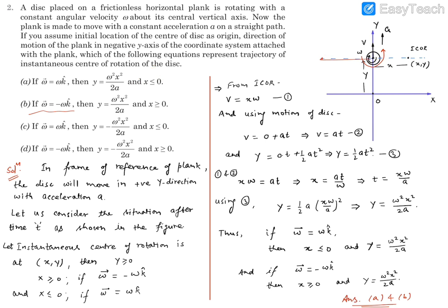And this quadrant will say x has to be less than or equal to zero, that means x has to be negative. So based on the direction of omega we will get x negative zone or x positive zone. Y will remain the same expression.